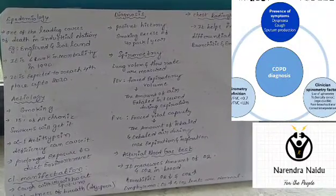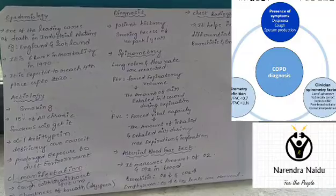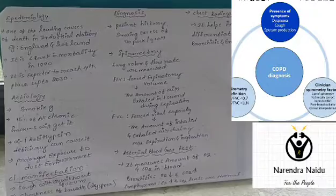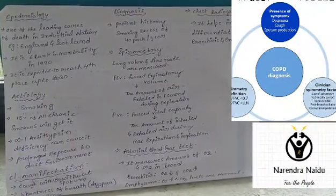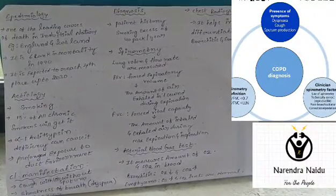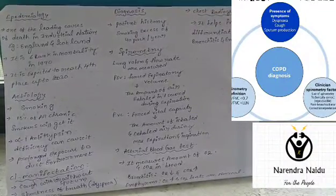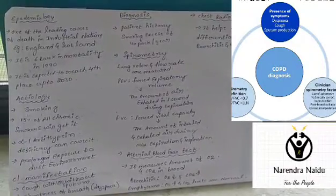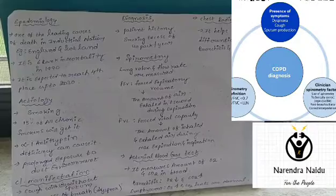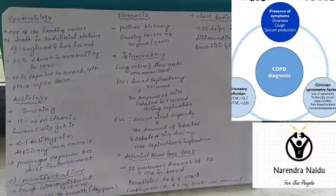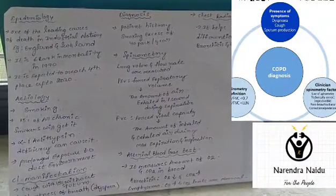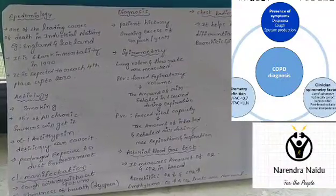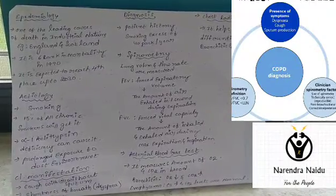Diagnosis is primarily made through patient history and spirometry. Spirometry measures forced expiratory volume — the amount of air exhaled in one second — and forced vital capacity, which measures the total inhaled and exhaled air capacity of the patient.